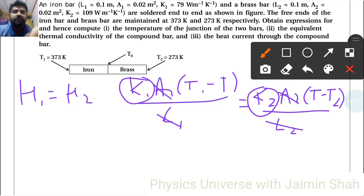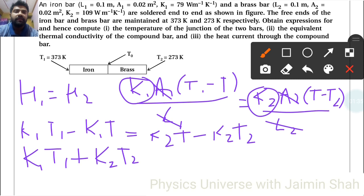So we are only left with K1 T1 minus K1 T is equal to K2 T minus K2 T2. Now T terms on one side, all terms on another side, so K1 T1 plus K2 T2, right to left, is equal to K2 T plus K1 T.